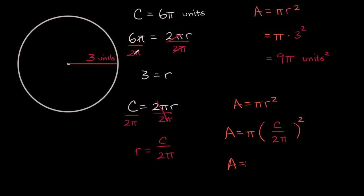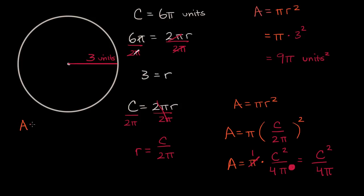So what is this going to be equal to? We get area is equal to pi times circumference squared over two pi squared, which is four pi squared. We have a pi in the numerator and pi squared in the denominator, so pi divided by pi squared is just one over pi. And so there you have it: area is equal to circumference squared divided by four pi. You don't tend to learn this formula, but it's cool that we were able to derive it.